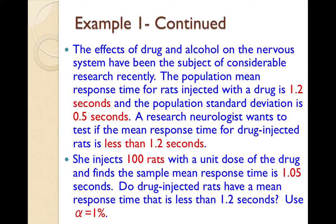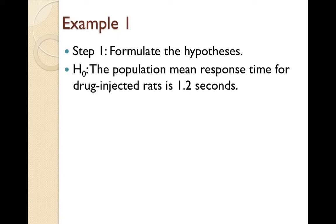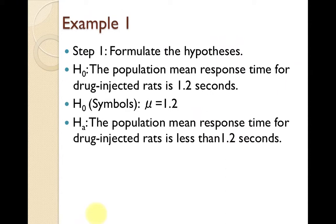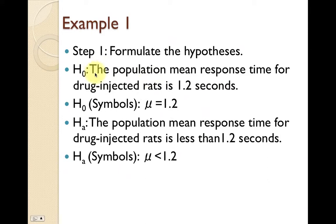At the end, we'll decide if it's possible that we've made either a type 1 or a type 2 error. Our hypotheses: the null hypothesis is that the population mean response time for drug-injected rats is 1.2 seconds — symbolically, μ = 1.2. The alternative hypothesis is that the population mean response time for drug-injected rats is less than 1.2 seconds — μ < 1.2. The null and alternative hypotheses always begin with 'the population mean.' The null states the population mean equals some value; the alternative states it is less than or greater than that value.